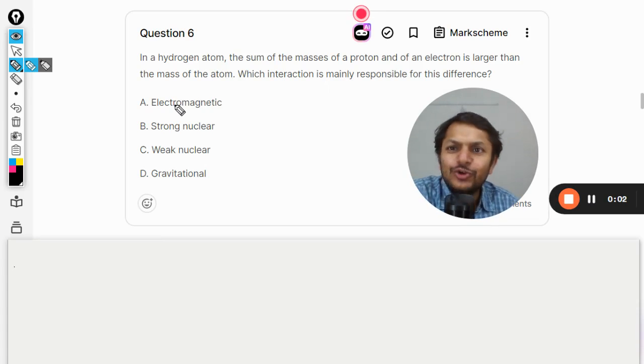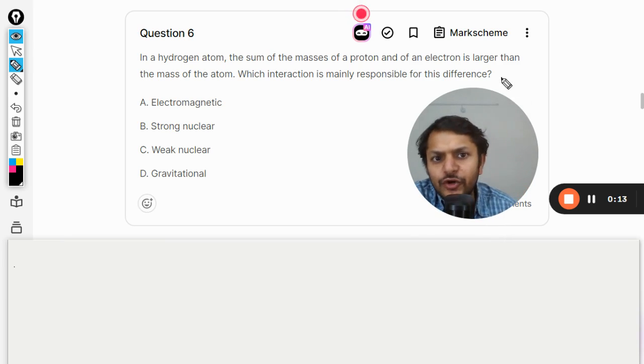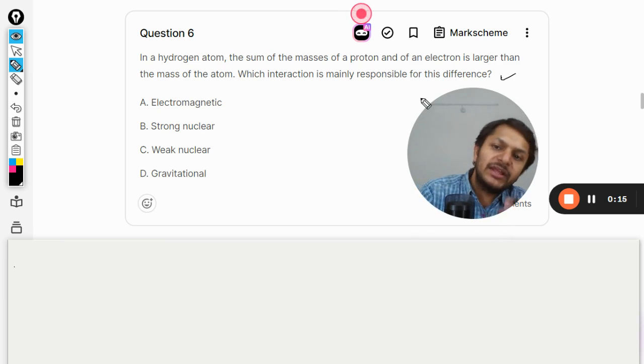Okay dear students, let us see what is there in this question. In a hydrogen atom, the sum of the masses of a proton and an electron is larger than the mass of the atom. Which interaction is mainly responsible for this difference? Now what is happening here, try to understand.